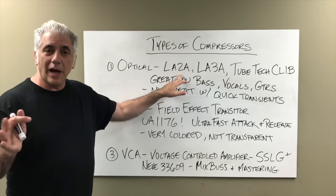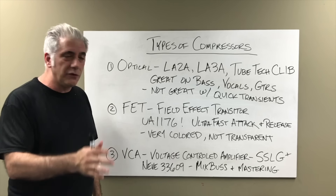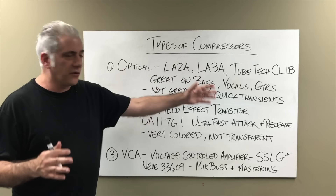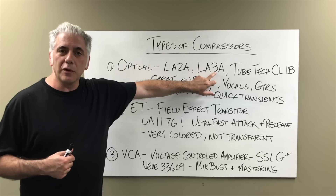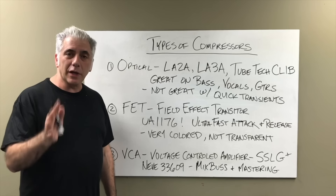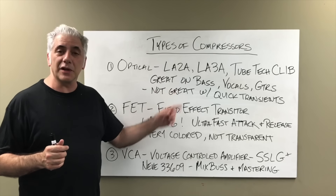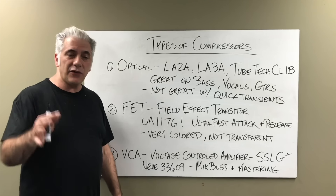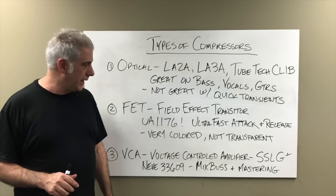Daniel Lanois — a phenomenal producer who produced Peter Gabriel's records and many of U2's records — uses the LA-2A on everything: vocals, guitars, you name it. Chris Lord-Alge's go-to compressor is the LA-3A for electric guitars. If you're looking for something that's going to grab really quick transients, that's not the compressor to use. But the LA-2A on bass or anything with low end — killer, sounds great.